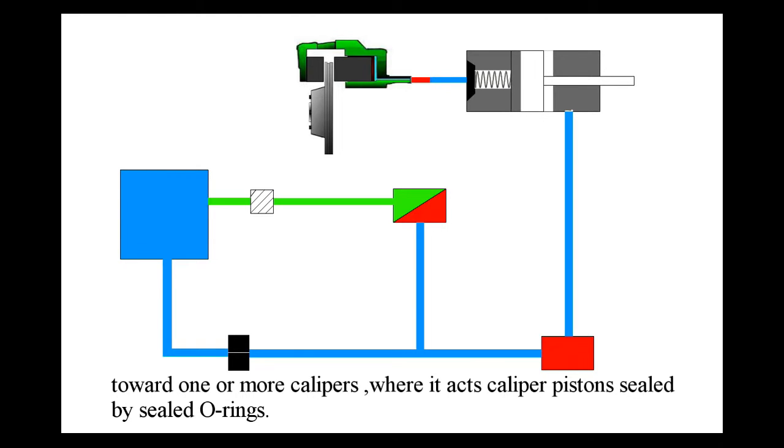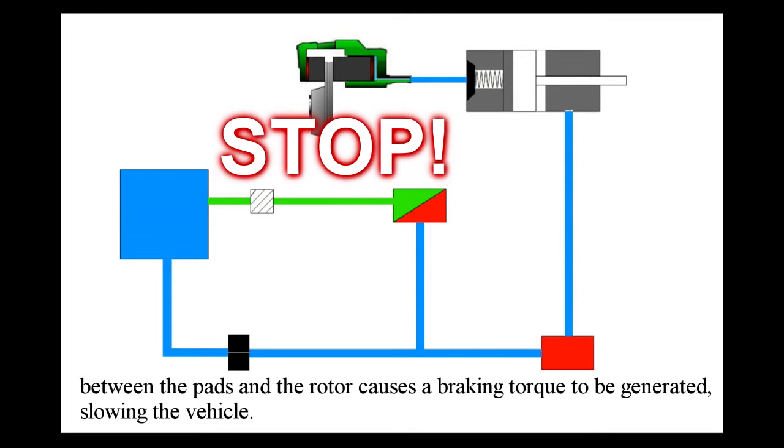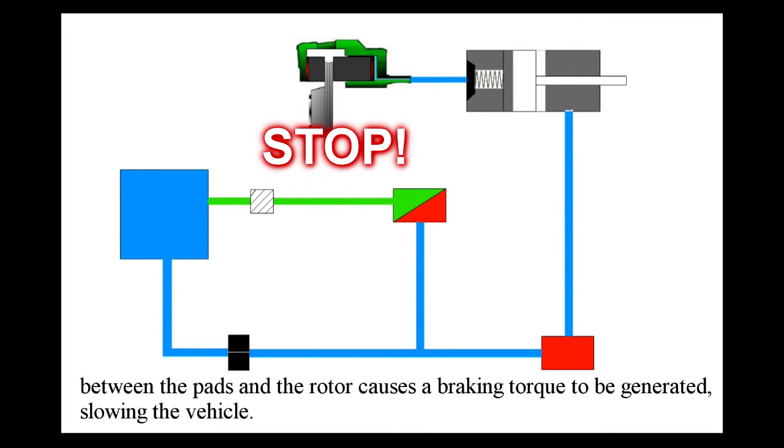The fluid acts upon the caliper pistons. The brake caliper pistons then apply force to the brake pads, pushing them against the rotor, and the friction between the pads and the rotor causes a braking torque to be generated, slowing the vehicle.